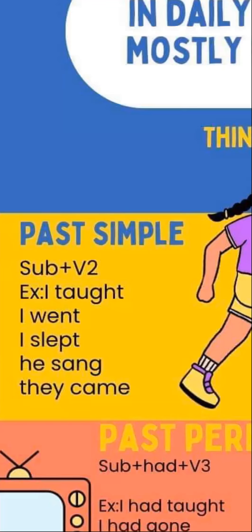Past simple means something that happened before. The structure for present simple is Subject + V1. For past simple, it's Subject + V2. V1 is the present form, V2 is the past form, and V3 is the past participle.